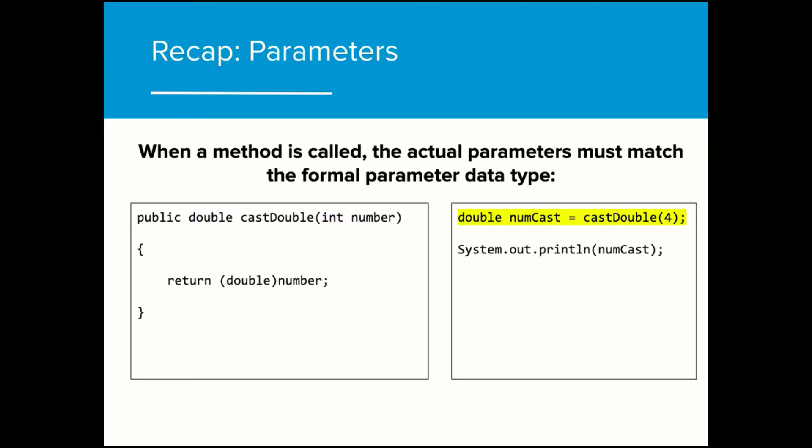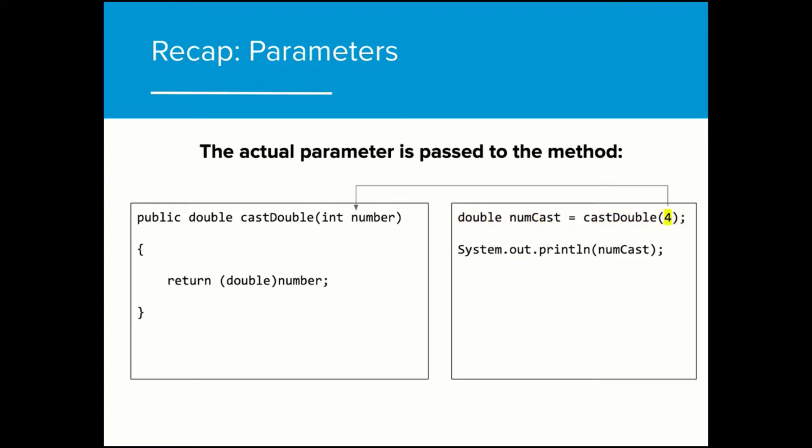When a method is called, the actual parameter must match the formal parameter type. In this case, the value four is an int, so this value can be passed to the cast double method. The actual parameter is then passed to the method and used accordingly. The formal parameter int number is initialized with a value four and is then cast to a double. The method then returns the value to the initial program, which prints the value of numcast out to the console.